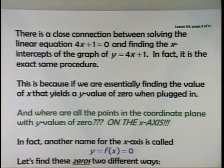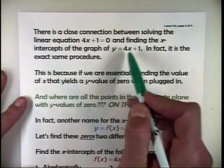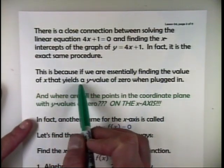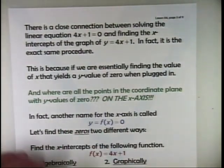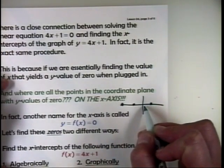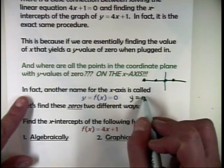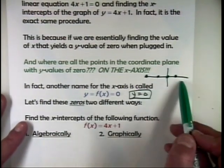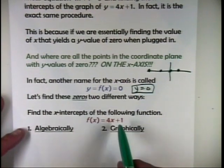There's a close connection between solving linear equations — in this case 4x plus 1 equals 0 — and finding the x-intercepts of the graph of f of x equals 4x plus 1. We're essentially finding the value of x that yields a y value of 0. Where are all the points with y values of 0? On the x-axis. Any point on the x-axis — whether it's (3,0), (-5,0), (-2,0) — all have y values of 0. Another name for the x-axis is the horizontal line y equals 0. We're going to find the zeros — the x-intercepts — both algebraically and graphically.